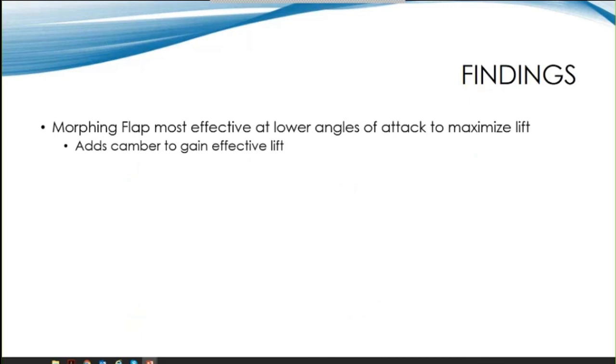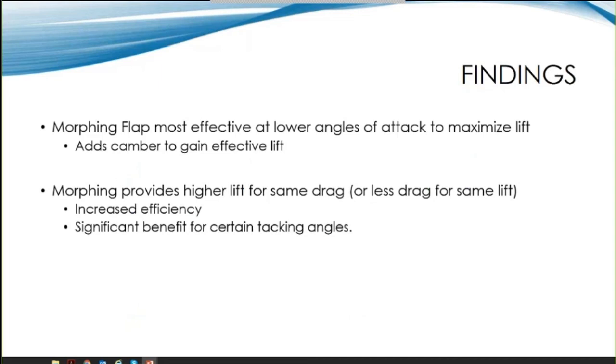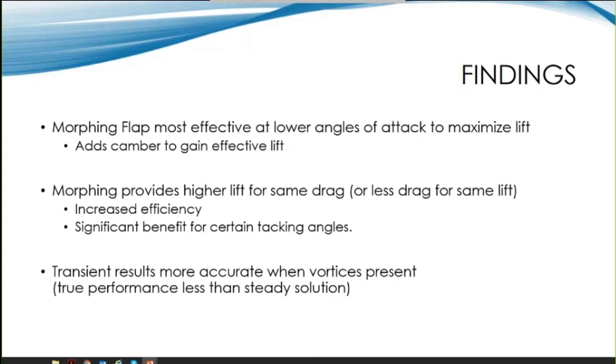From the research work conducted, we identified three key points. Morphing the sail is more effective at lower angles of attack. This is because the effective increase in camber generates higher lift, and this is very attractive for improving the upwind pointing on a sailboat. The morphing provides increased efficiency by delivering more lift for the same drag, or less drag for the same lift. The preference for higher lift or lower drag depends on the tacking angle of the boat relative to the wind. And we showed the importance of transient results in determining performance when vortices are present. Static analysis over-predicts the performance.